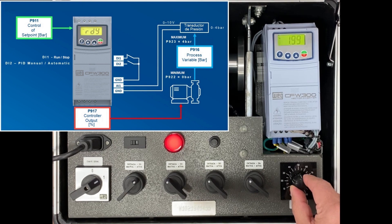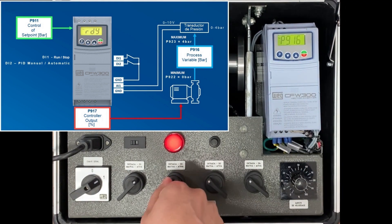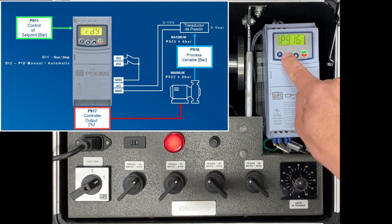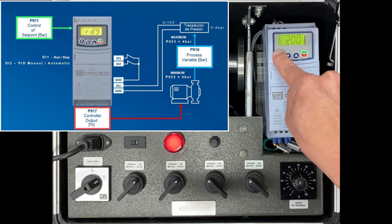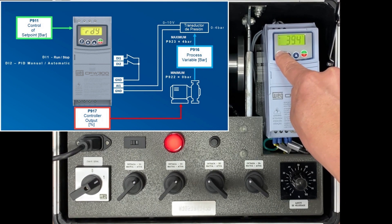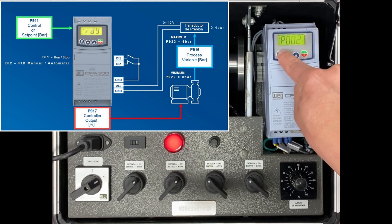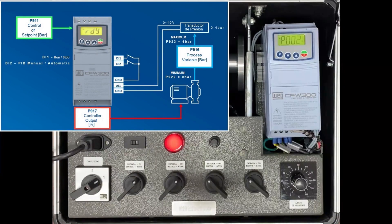Then, we can switch the PID to automatic mode by closing DI2. As the desired value P911 is equal to the value measured at P916, the motor speed remains the same in P917, where it displays the output value of the PID controller in percentage. If you prefer, you can also monitor the output speed of the motor in Hertz in P002.